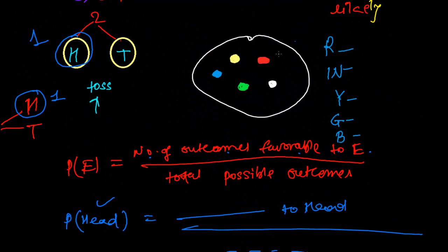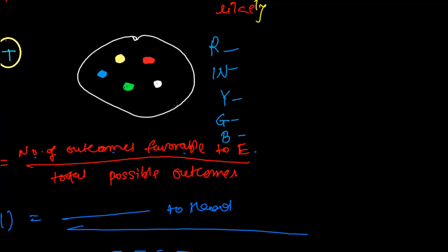Now if we look at the marble experiment — we had the balls in the box. If we talk about the probability of getting a white ball, then using the formula: number of outcomes favorable to event E — here our event is white. If I take out one marble, I may get yellow, I may get green, or I may get blue, or I may get white — there is no certainty.